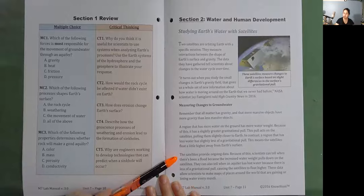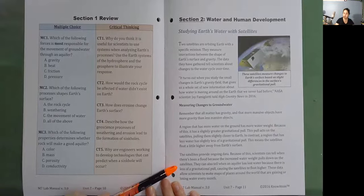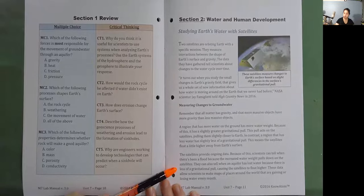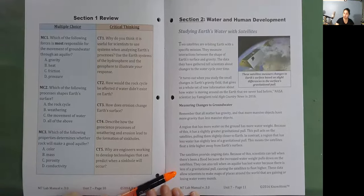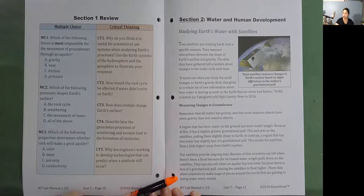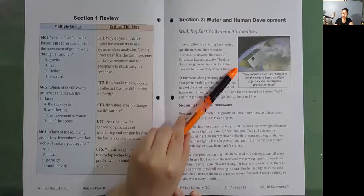The satellites provide ongoing data. Because of this, scientists can tell when there's been a flood, because the increased water weight pulls down on the satellites. They can also tell when an aquifer has lost water, because there is less of a gravitational pull, causing the satellites to float higher. These data allow scientists to make maps of places around the world that are gaining or losing water every month. These satellites measure changes to Earth's surface based on slight differences in the surface's gravitational pull.